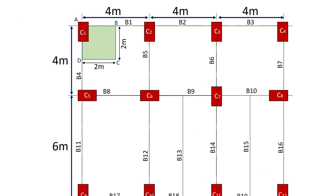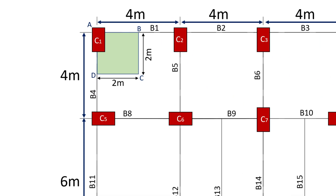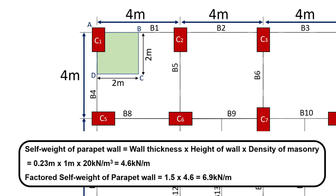Since column 1 lies at the corner of the building, we need to consider the self-weight of the parapet wall as well. This is calculated as: thickness of parapet wall (0.23 m) x height of parapet (1 m) x density of brick masonry (20 kN/m³), giving a total of 4.6 kN/m.